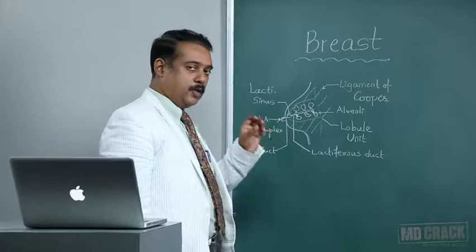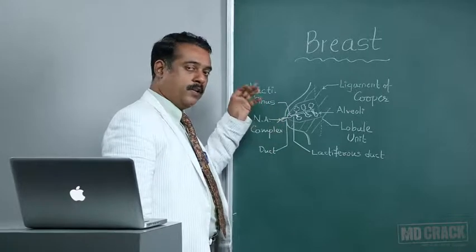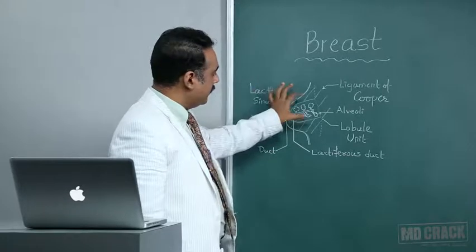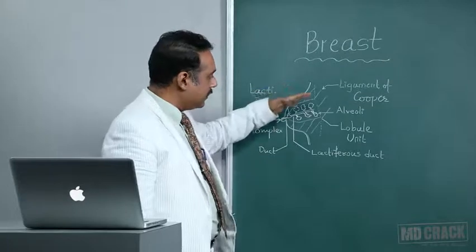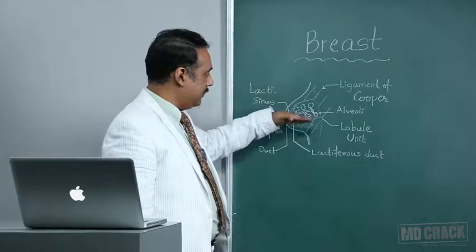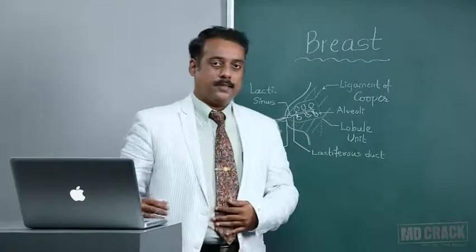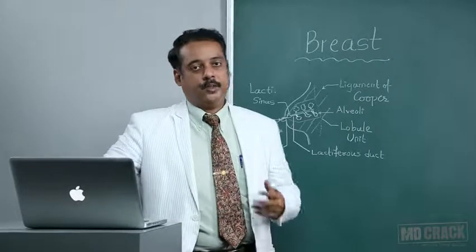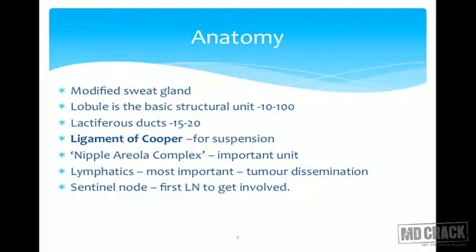On either side it offsets and forms various alveoli, and the epithelium of these alveoli forms the breast milk. This entire structural unit is portrayed in magnified form; there are hundreds of such units in the human breast. Approximately 100 such lobules are present in the human breast, and the lactiferous ducts are approximately 15 to 20 in number.